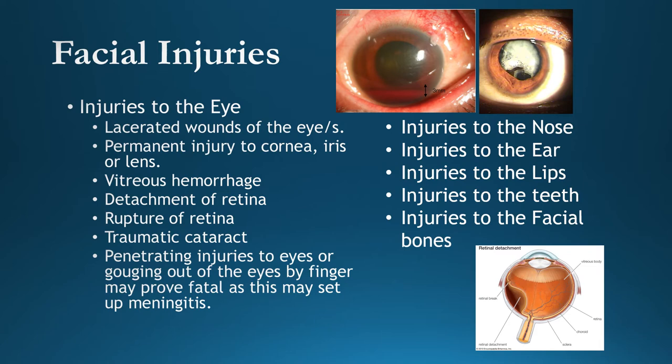Injuries to facial bones are mostly corollary in nature, due to blunt force attack, traffic accidents, rail accidents, or falling from height. Facial bones involved include nasal bones, ethmoid bones near the eyes, maxilla above the mouth, malar bones, and mandible. Injuries causing blindness, deafness, severe brain injury, or disfigurement of appearance or senses are considered grievous hurt under Section 320 IPC.